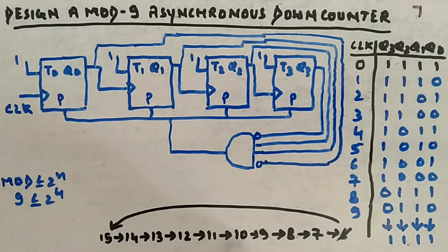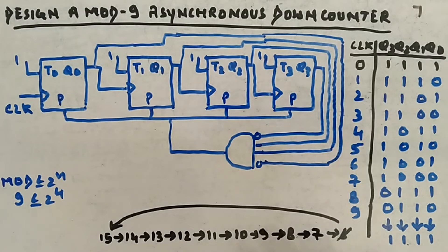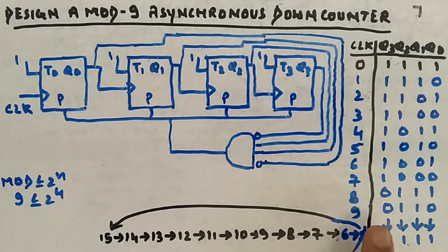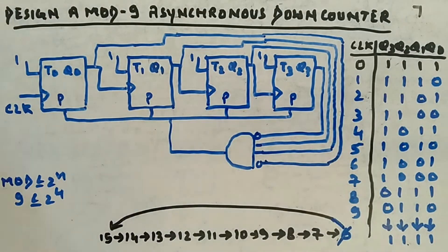So the sequence is: 15, 14, 13, 12, 11, 10, 9, 8, 7, 6 — as soon as 6 comes, it goes back to 15. If you had synchronous type of preset, there would be one more extra state — 6 would appear, and when 5 would be reached, it goes back. So one extra cycle is taken with synchronous input. But usually you won't see that kind of question — mostly you will see asynchronous preset.